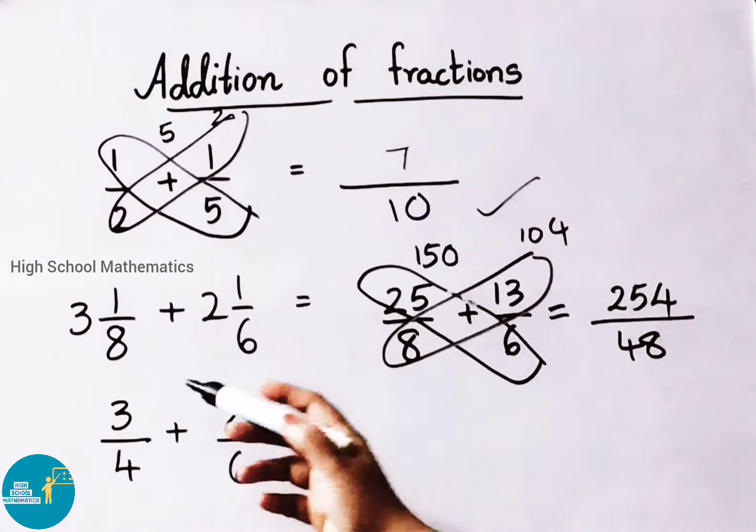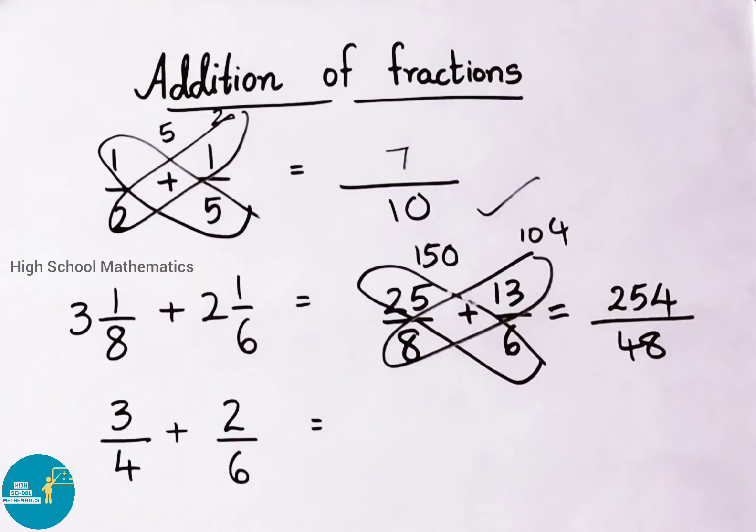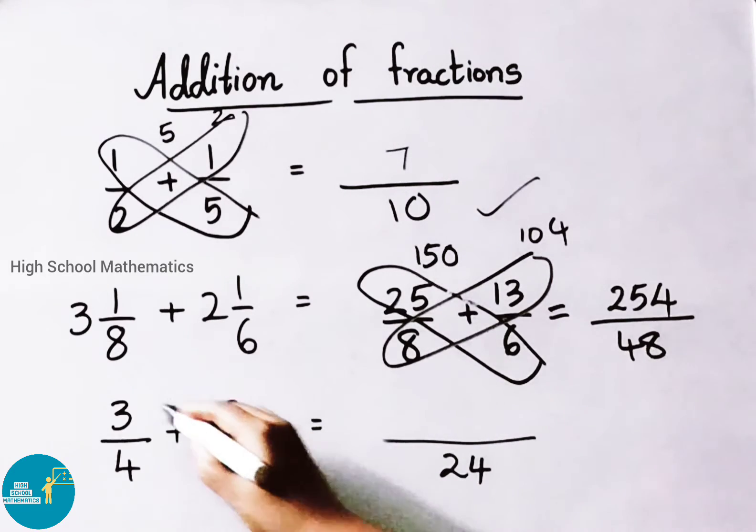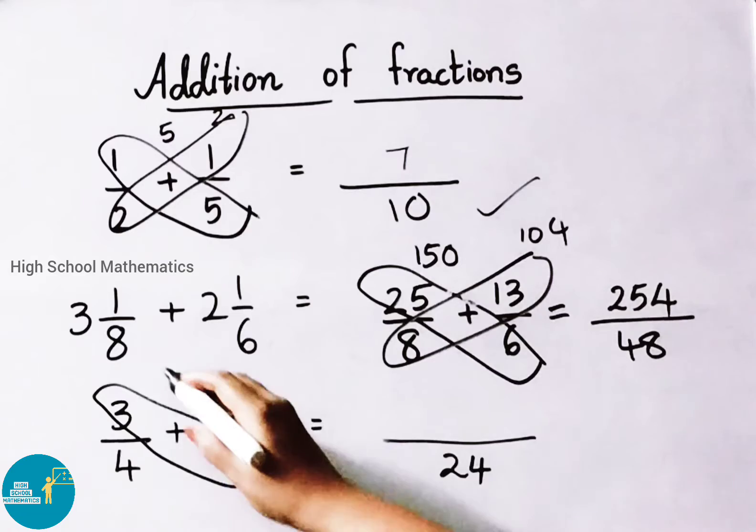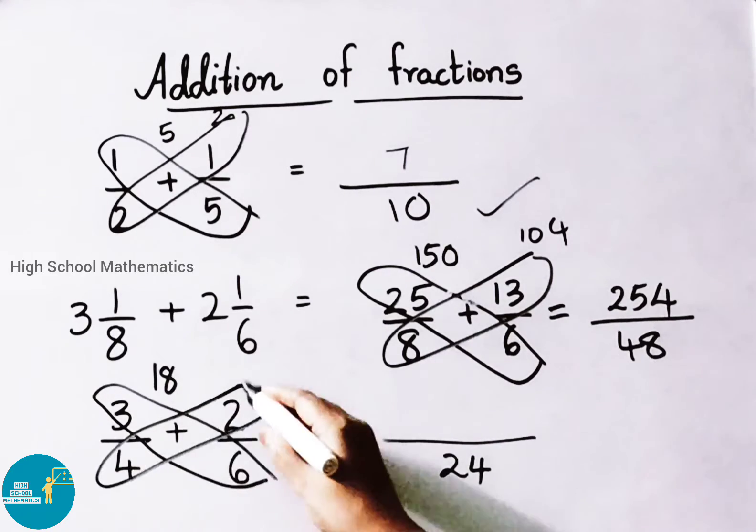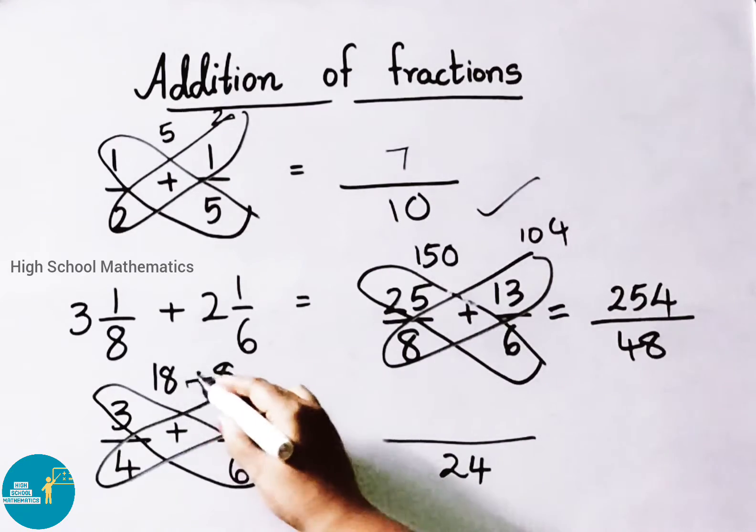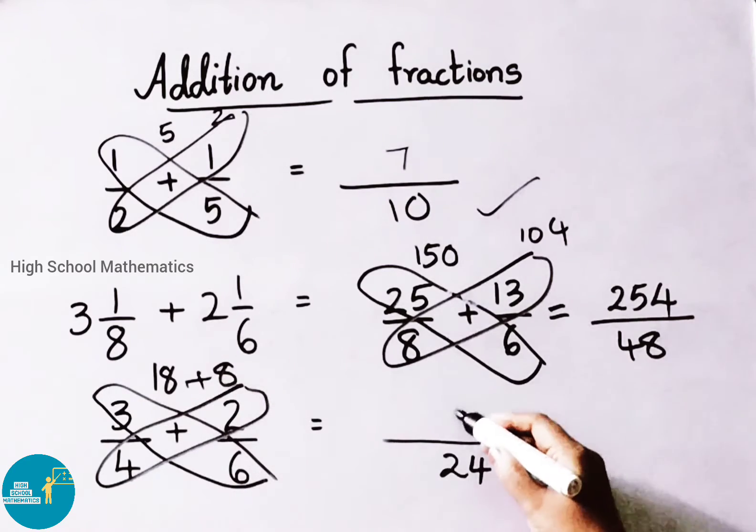Let us see another example. 3 by 4 plus 2 by 6. Multiply denominator, 4 times 6 is 24. Now let us do cross multiplication. 3 times 6 is 18, 2 times 4 is 8. 18 plus 8, that is 26.